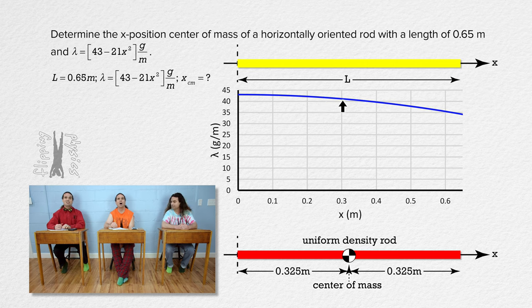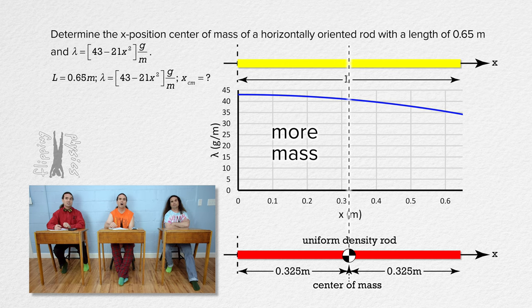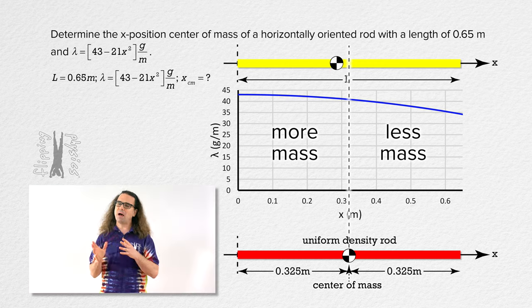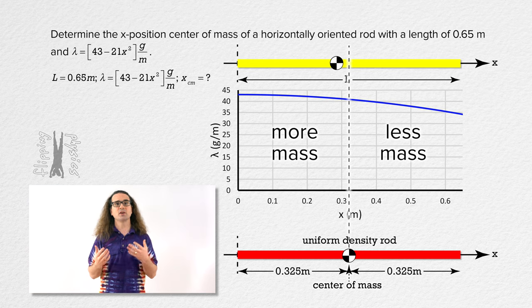Oh, that means the linear mass density of the rod decreases from left to right, so we should expect the rod to have more mass concentrated to the left of its center than to the right, so the center of mass of the rod should be a bit to the left of the geometric center of the rod. Exactly, Billy. Bobby, what equation are we going to use to determine the x-position center of mass of this rigid object with shape of non-uniform density?